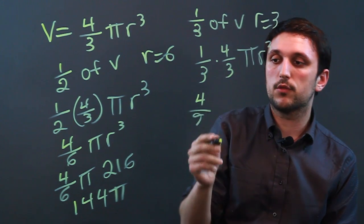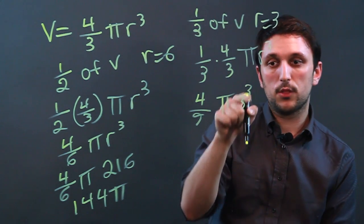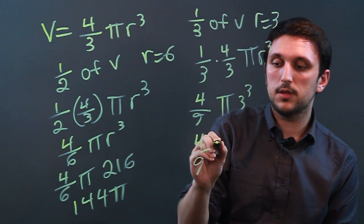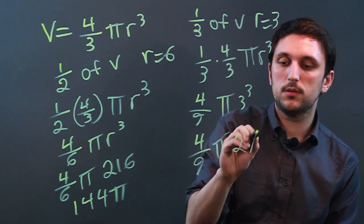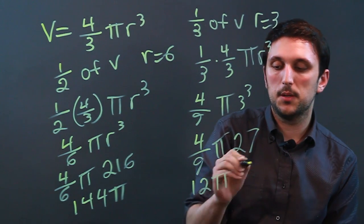And we know that the radius is three. It's pi times three cubed. Three cubed is 27. Four-ninths times pi times 27. And four-ninths of 27 will be 12. So, 12 pi.